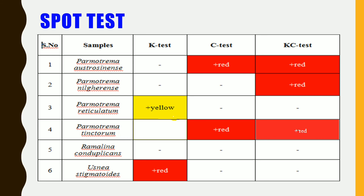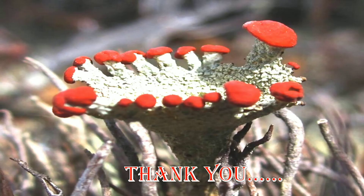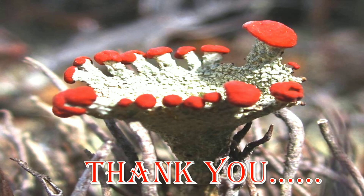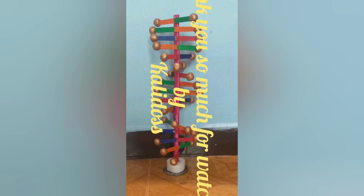Spot tests are used for the identification of lichen species using the K test, C test, and KC test. In conclusion, around 11 species were identified using the micro crystallization method, which we have concluded is the most useful method.